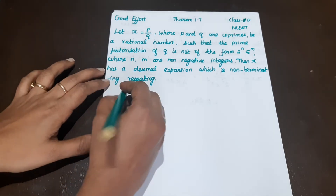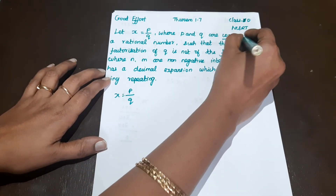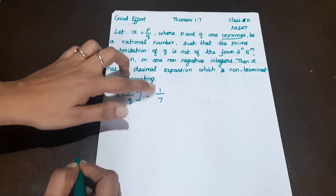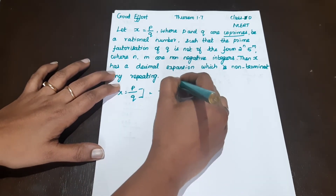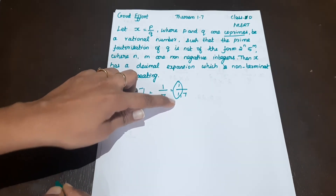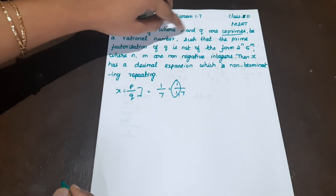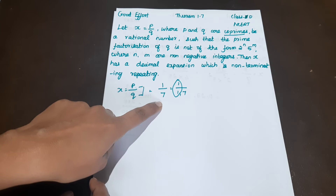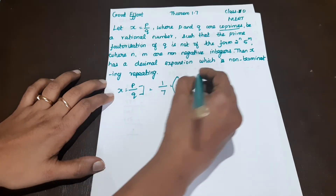Here, x = p/q is given where p and q are co-primes. For example, 1/7 — the common factor of 1 and 7 is only 1. When the common factor is only 1, the numbers are called co-primes. So in p/q, where p and q are co-primes, 1/7 is a rational number. Here q = 7, which is not of the form 2 raised to the power n, 5 raised to the power m.